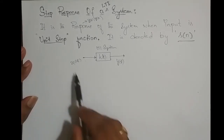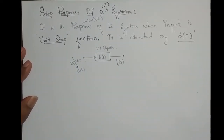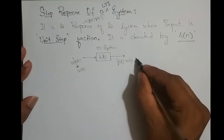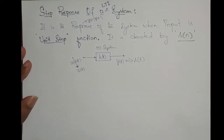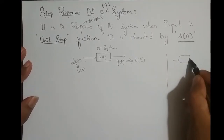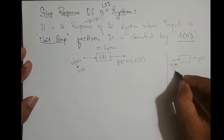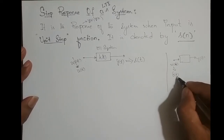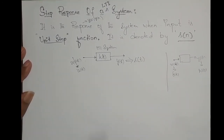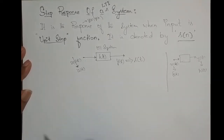Since we are defining the step response, the input we feed is the unit step function u(t). So if I feed u(t) as input, the response is the unit step response s(t). This is analogous to the impulse response: if the input is delta(t) — the unit impulse — the output is h(t). Similarly, if the input is the unit step function, the output is the step response. This holds for discrete time systems as well.